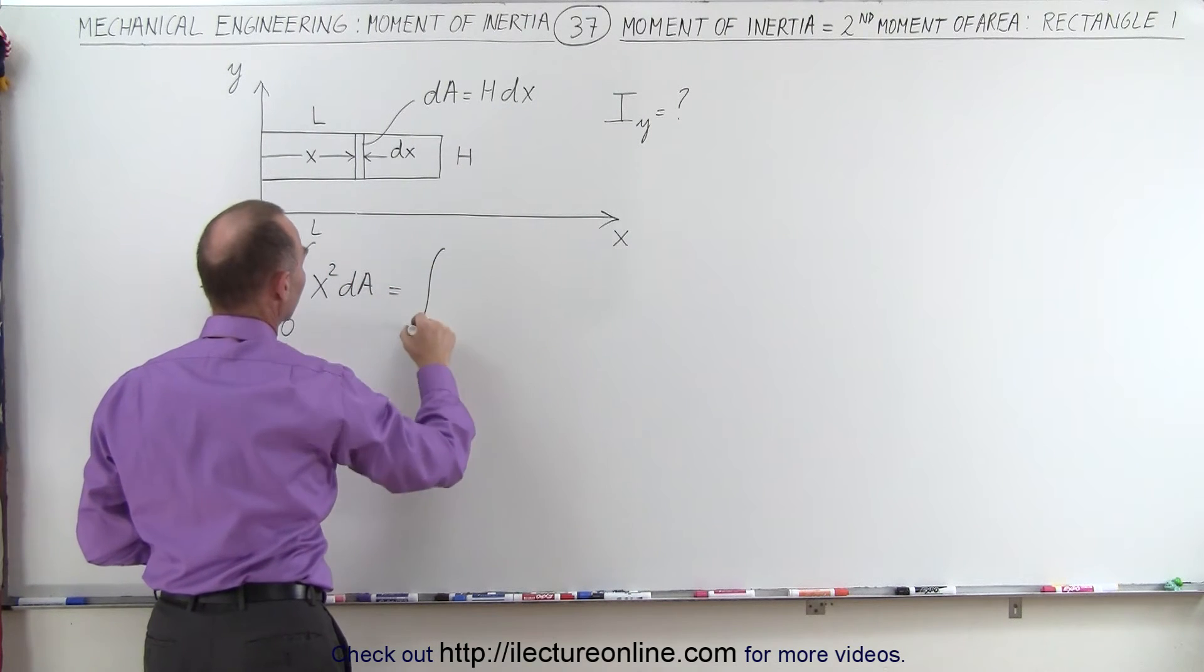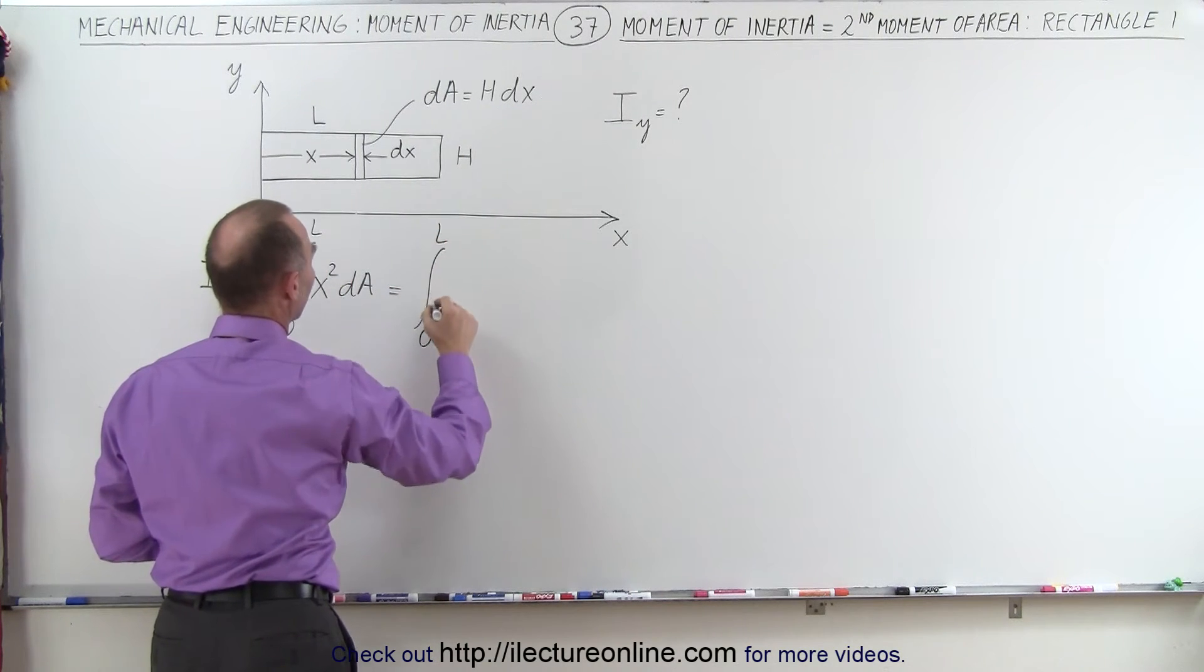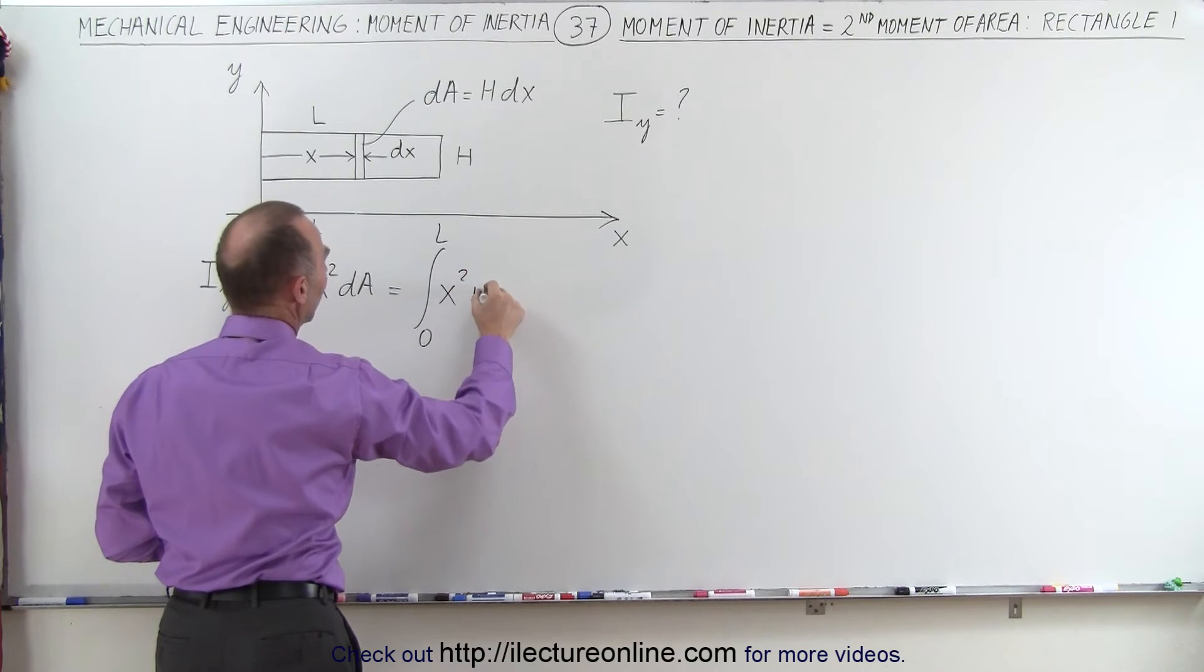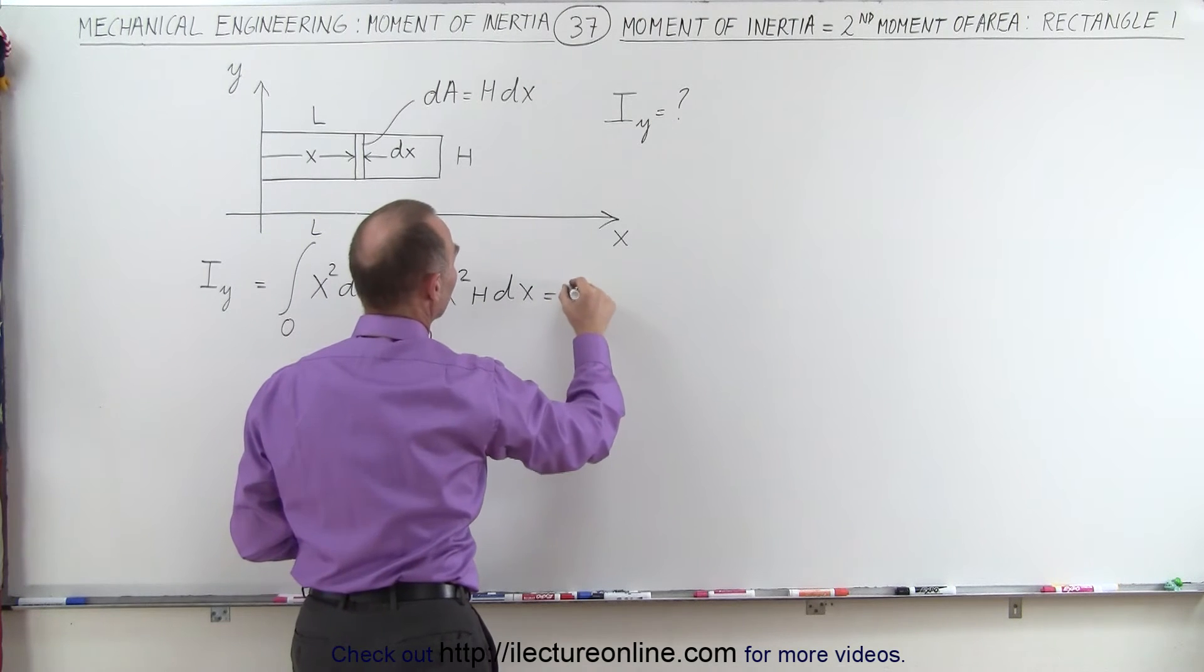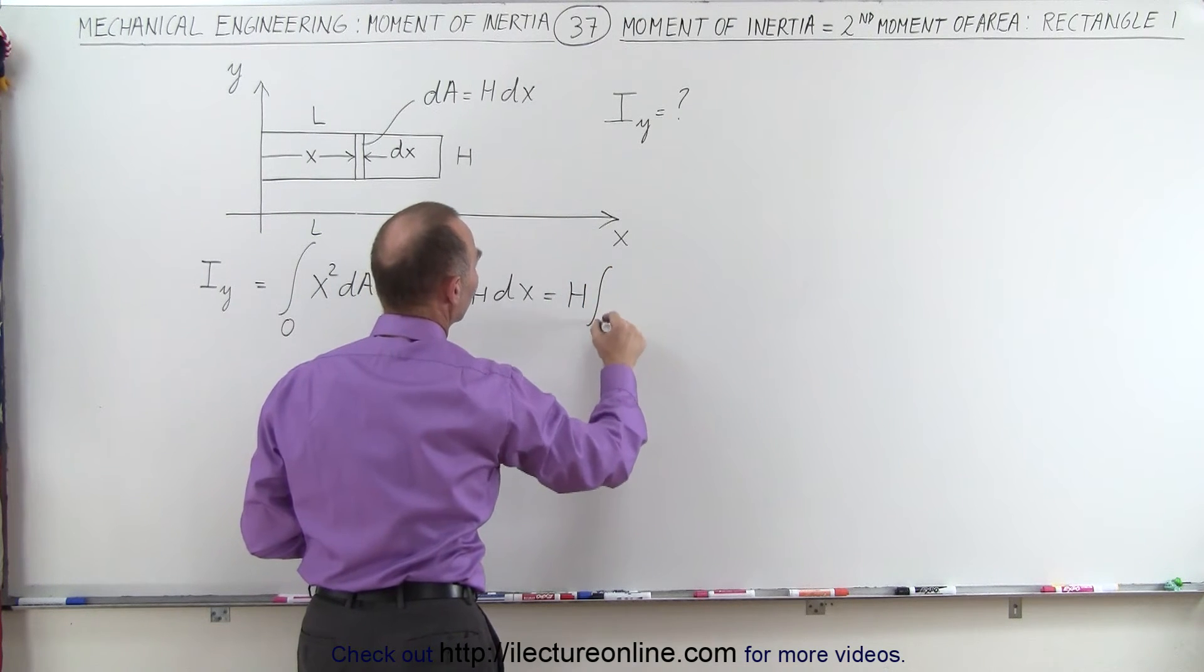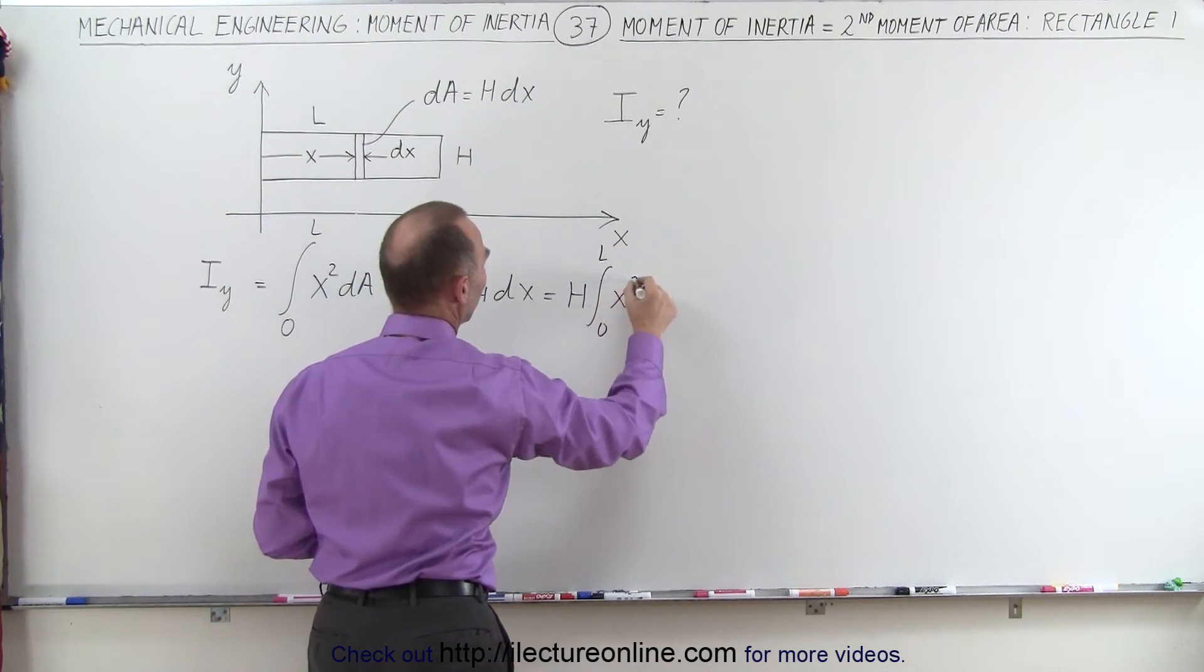So this becomes equal to the integral from zero to L of x squared times h times dx. And of course, h can come out of that integral sign. This is h times the integral from zero to L of x squared dx.